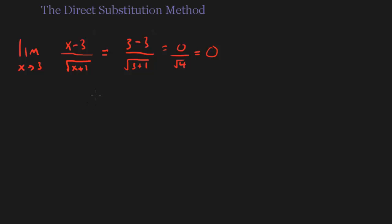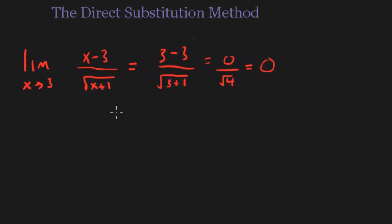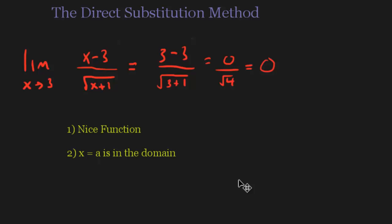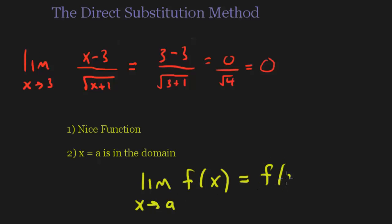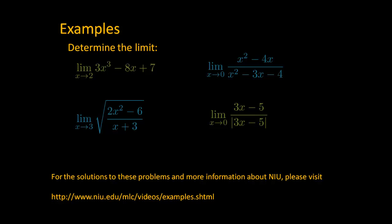So I think we've done plenty of examples now. What did we learn? If you have a nice function and a is in the domain, then all you have to do is take x equals a, plug it in, and that will be our limit. I have some examples up on the screen right now, so go ahead and try these limits out. To find the solutions to these problems and more information about NIU, please follow the link down below. Good luck.